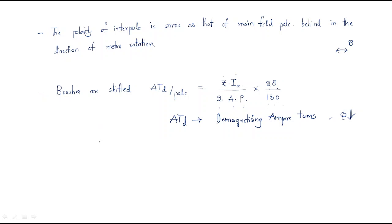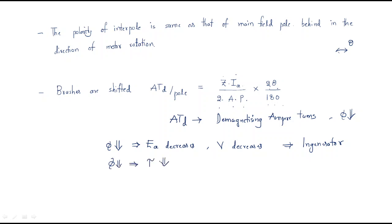When the brushes are shifted, the flux value decreases, and as a result the armature EMF also decreases. So the load voltage decreases — this is in the case of the generator. In the case of a motor, when flux decreases, torque decreases because torque is proportional to both flux and armature current. When torque decreases, speed automatically increases.